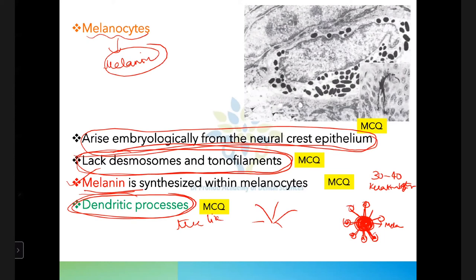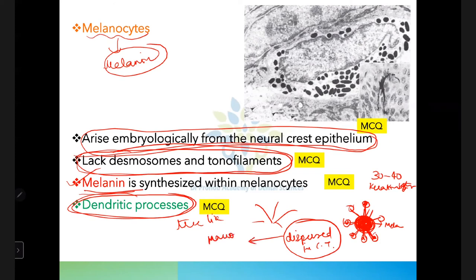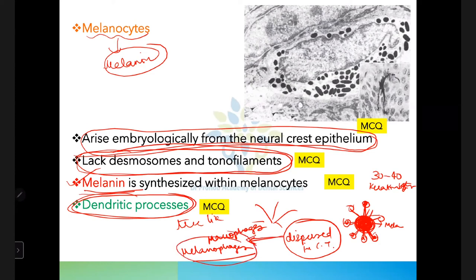Melanin that disperses into the connective tissue is phagocytosed by macrophages called melanophages. In summary: melanocytes arise from neural crest epithelium, lack desmosomes and tonofilaments, synthesize melanin, have dendritic processes, contact 30–40 keratinocytes, and transfer melanin to them.